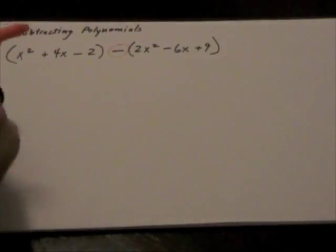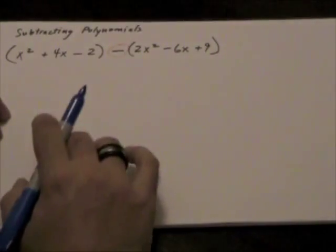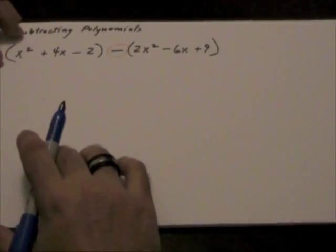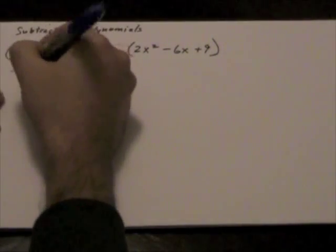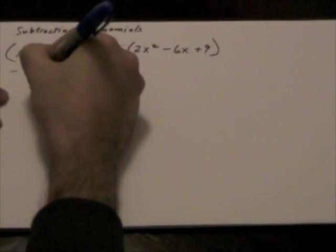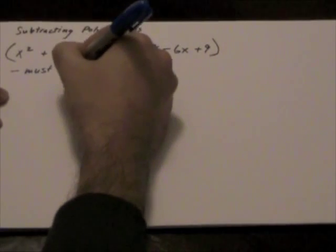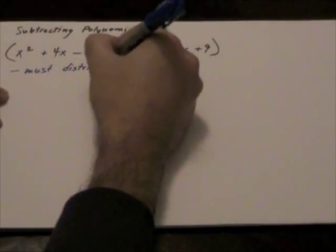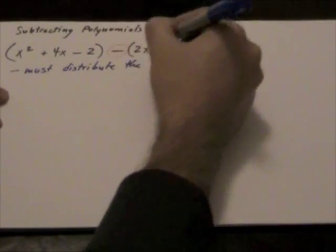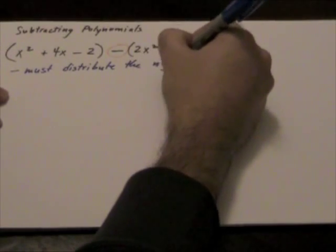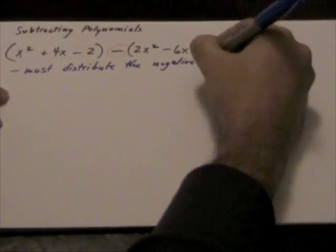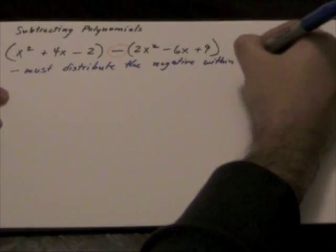This subtraction sign prevents us from just removing the brackets. Before we remove the brackets, we must distribute the negative within brackets.